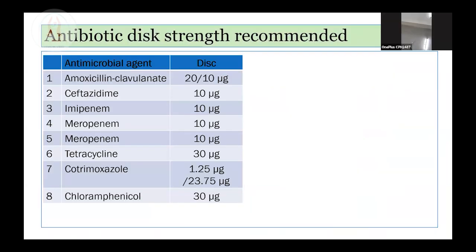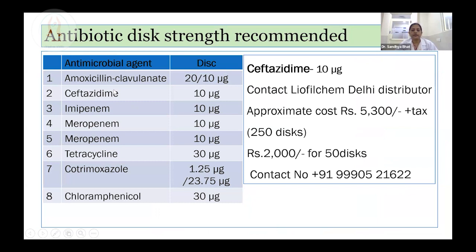These are the eight drugs in the testing panel, with the disk strengths noted. Ceftazidime 10 microgram disk will be used. The distributor is based in Delhi. He has given a quotation of approximately 5,300 rupees for around 250 discs, or 2,000 rupees for 50 discs, with taxes additional. The contact number of the distributor will be shared. Centers who want to enroll in this study must procure the ceftazidime 10 microgram disk.